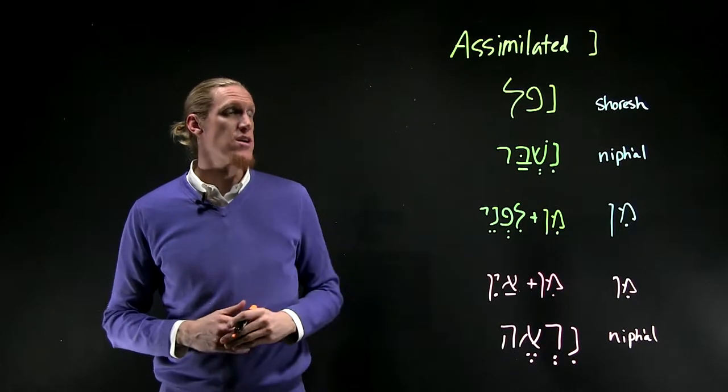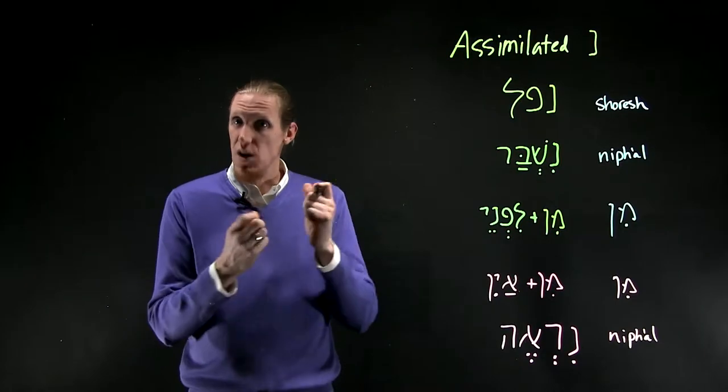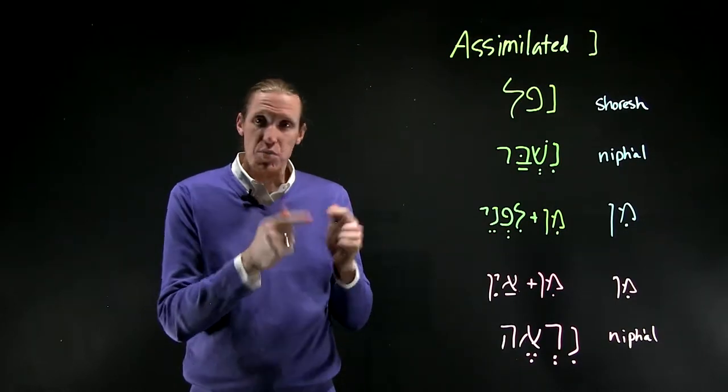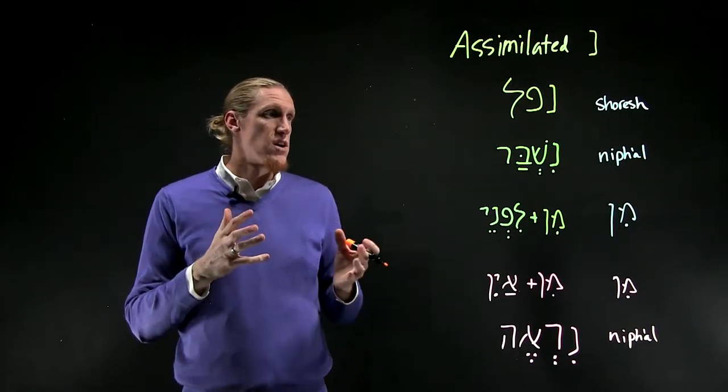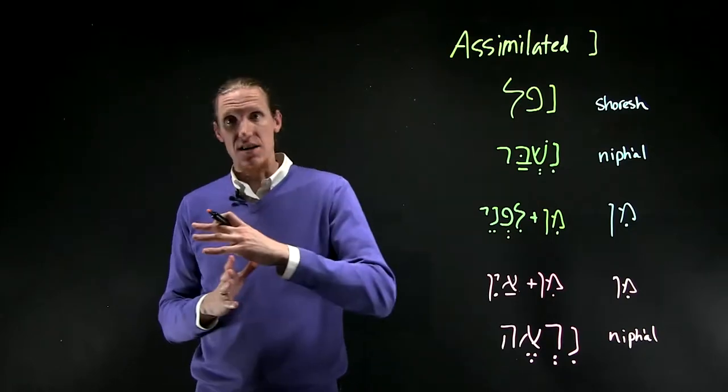For the assimilated noon, in certain situations, the noon will curl up into a little ball like a roly-poly bug because it's claustrophobic, and it will go in one of two directions. Either it will assimilate into the next letter,